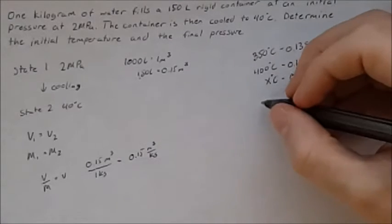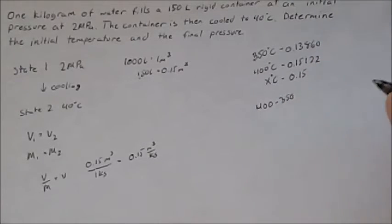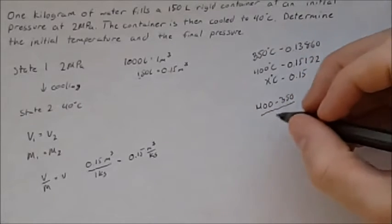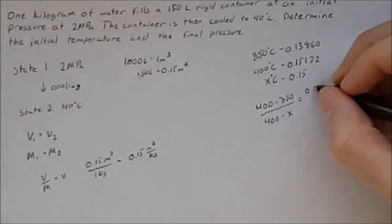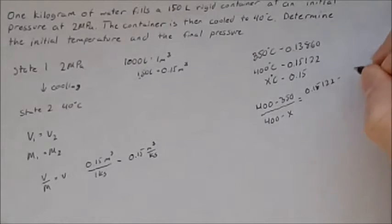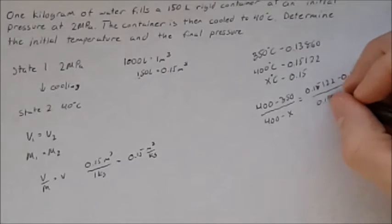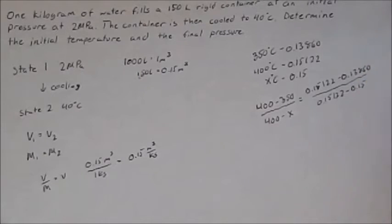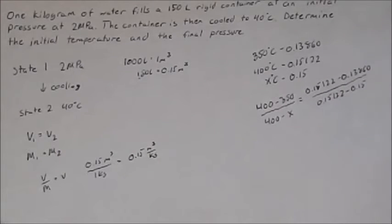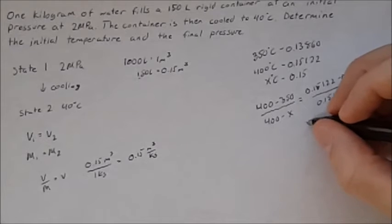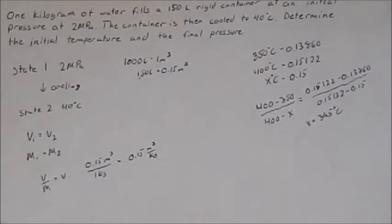So what we do is we create a ratio and these numbers can be used in either order since it's just a ratio as long as you properly set it up. So we have 400 minus 350 over 400 minus our unknown temperature and this will be equal to 0.15122 minus 0.13860 all over 0.15122 minus 0.15. It's just a ratio between the corresponding temperature with the corresponding specific volume and if you solve for x which is our unknown temperature we get an x of 395 degrees Celsius which is the initial temperature at state one.